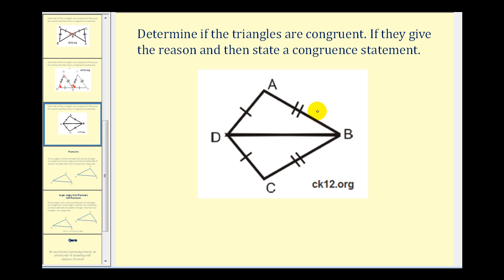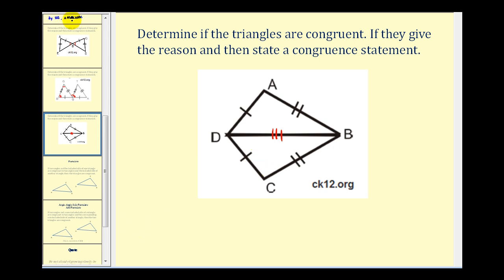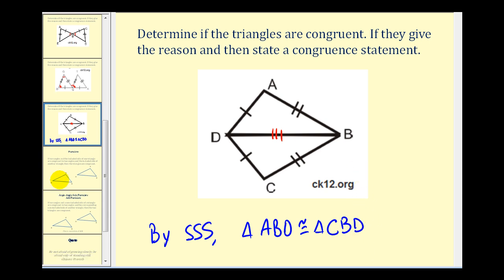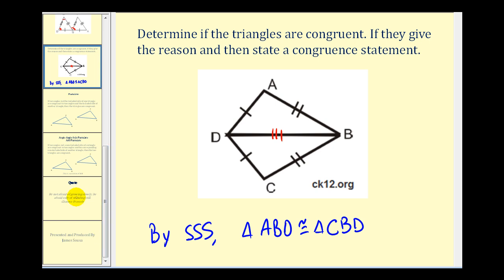Let's look at one more example. We're given two pairs of congruent sides, and both triangles share side BD, which is congruent to itself. So by side-side-side, these two triangles are congruent. Triangle ABD is congruent to triangle CBD, where A corresponds to C, B corresponds to itself, and D corresponds to itself. I hope you found these examples helpful. Thank you so much.